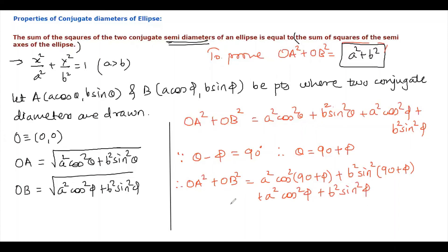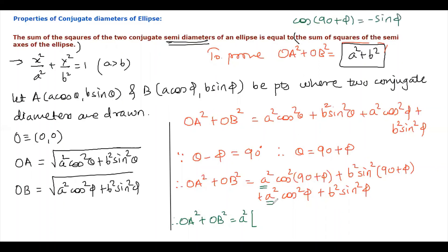These last two terms remain the same. There are two terms with a² and two terms with b². Taking a² common from the relevant terms: cos(90° + φ) = −sin φ, so cos²(90° + φ) = sin² φ. This gives a²(sin² φ + cos² φ). For the b² terms: sin(90° + φ) = cos φ, so sin²(90° + φ) = cos² φ, giving b²(cos² φ + sin² φ).